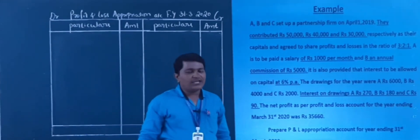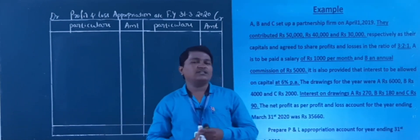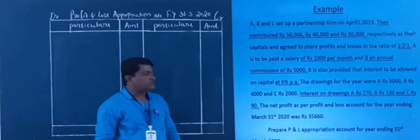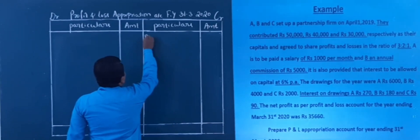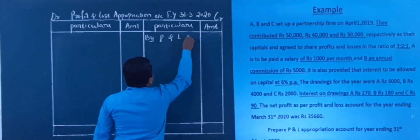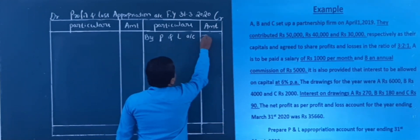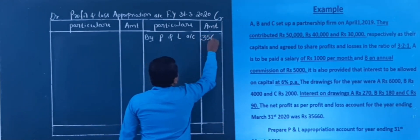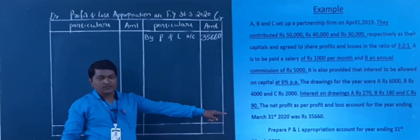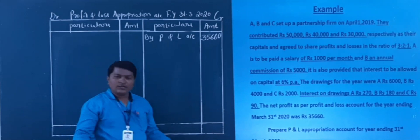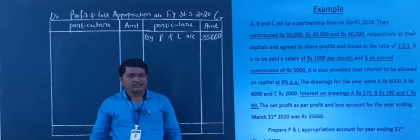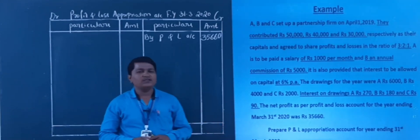So what do we do for the profit and loss appropriation account? Profit transfer means credit. So first of all, I write here: By Profit and Loss Account — that is the profit. What is the profit? Rs. 35,660. This is the profit for the year ending — Rs. 35,660.